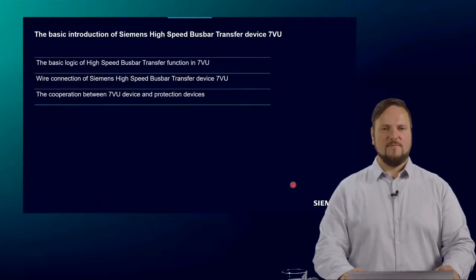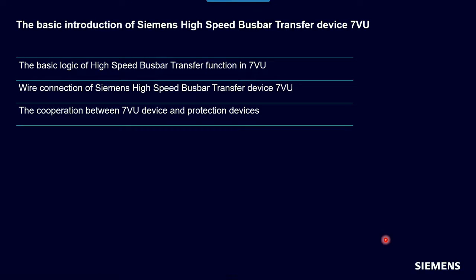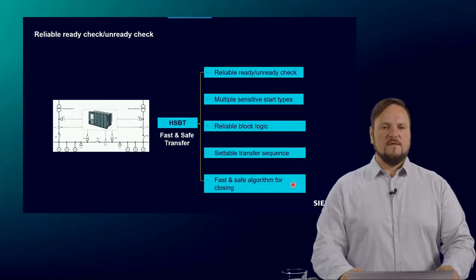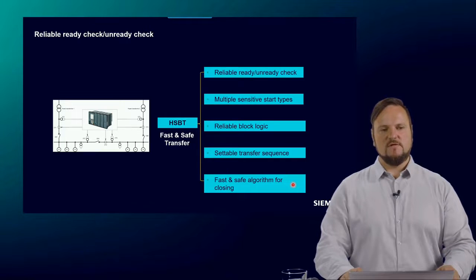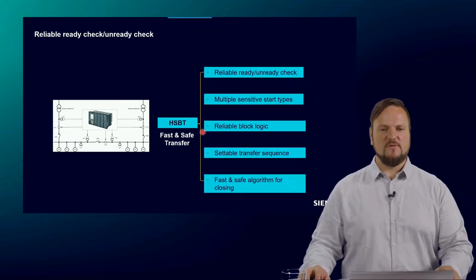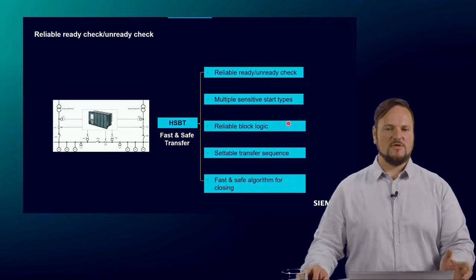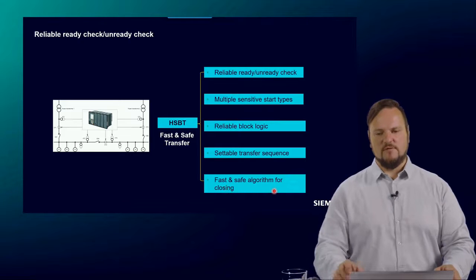Coming to the second part of my presentation — the basic introduction of an HSBT system. I will explain the basic logic, then the wiring connection, and finally one slide regarding the cooperation between the 7VU85 device and protection devices. The structure of the HSBT system includes the HSBT functionality itself, split into: a reliability check for readiness and unreadiness, multiple sensitive start types, a blocking logic check, the transfer sequence setting, and finally the fast and safe algorithm for closing the breaker.